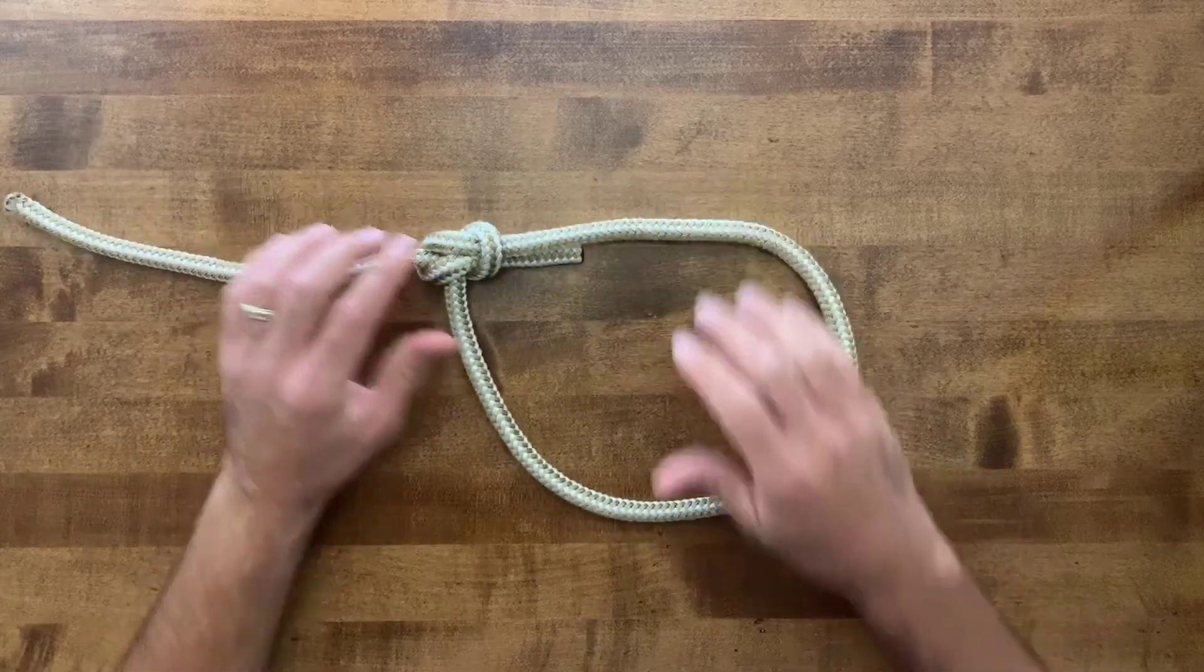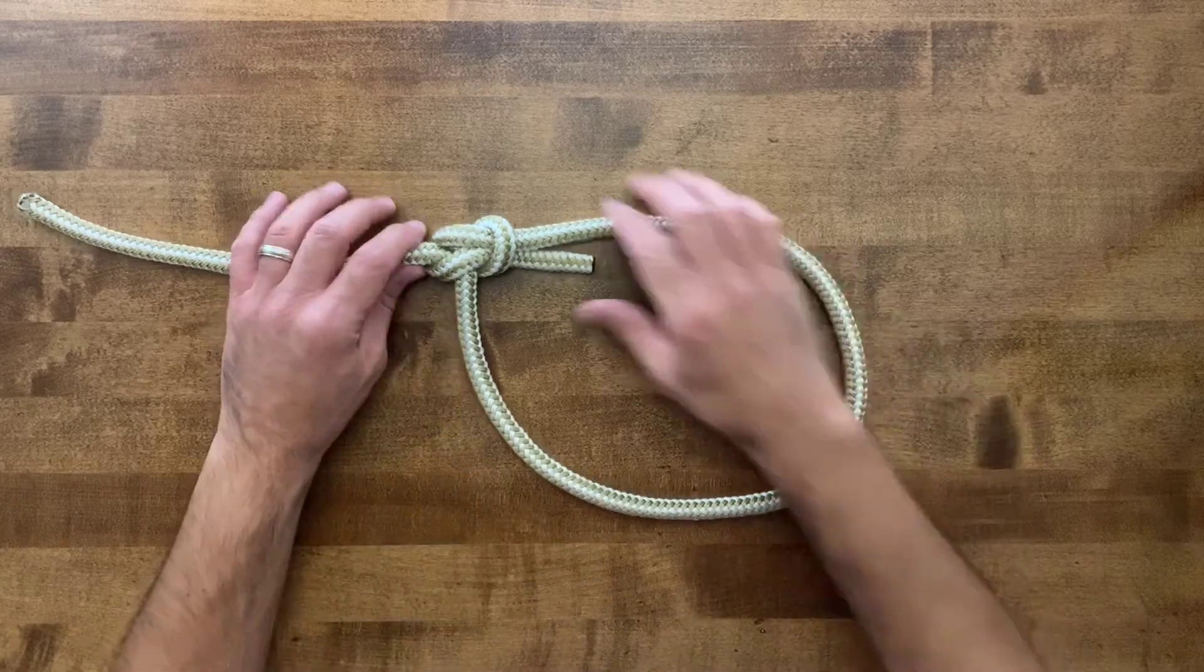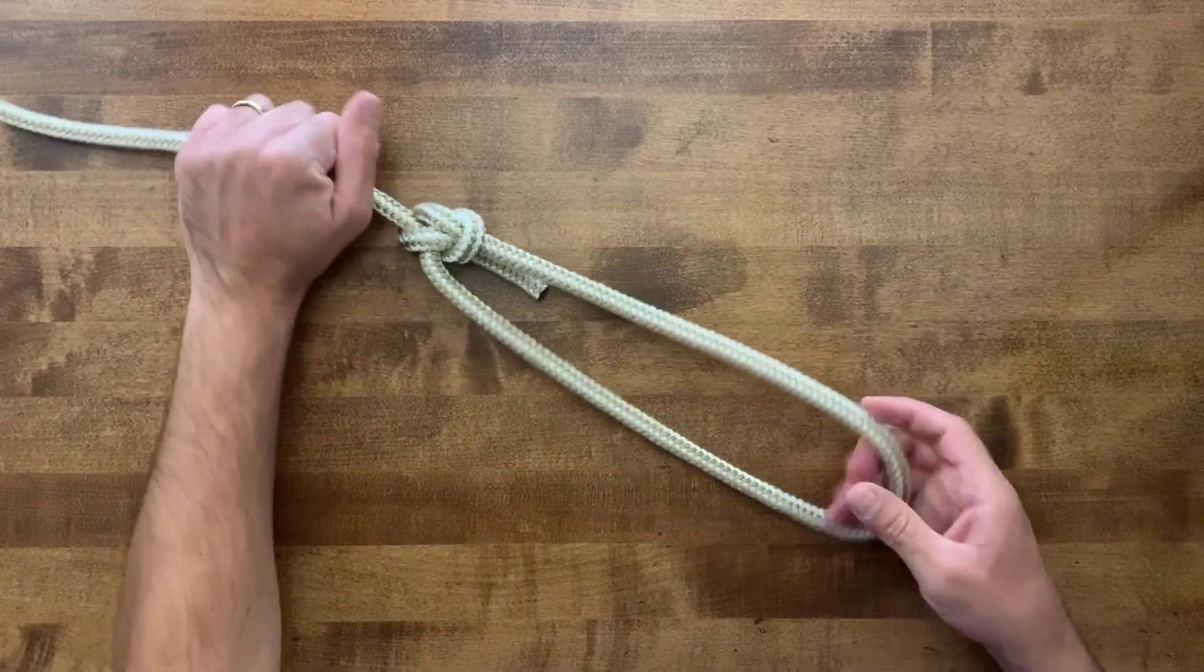So, remember, the rabbit goes up through the hole, around the tree, back down through the hole. Tighten it up. You've got yourself a bowline knot.